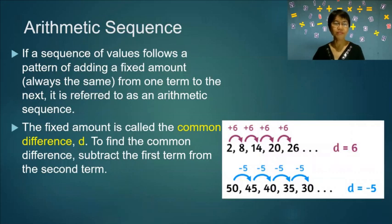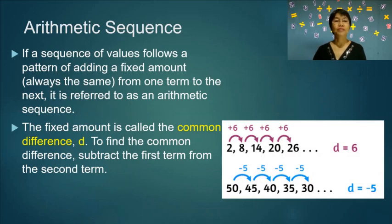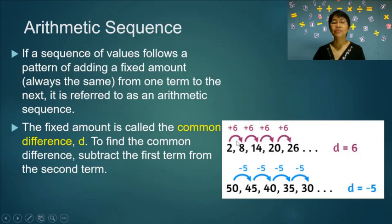Let's start with arithmetic sequences. If a sequence of values follows a pattern of adding a fixed amount from one term to the next, it is referred to as an arithmetic sequence. The fixed amount is called the common difference, d. To find the common difference, subtract the first term from the second term. So we have the second term 8 minus 2, which equals 6, or 14 minus 8 equals 6. The common difference is 6.